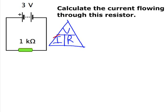Now we're looking for current, that means that we have to blank out I and see what we're left with. So we find that I is equal to V divided by R.